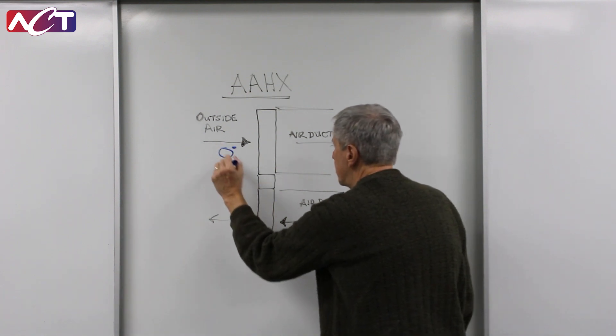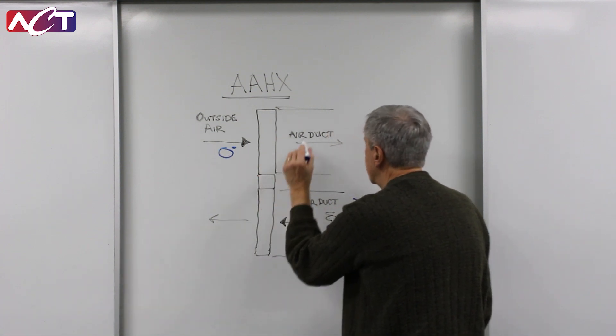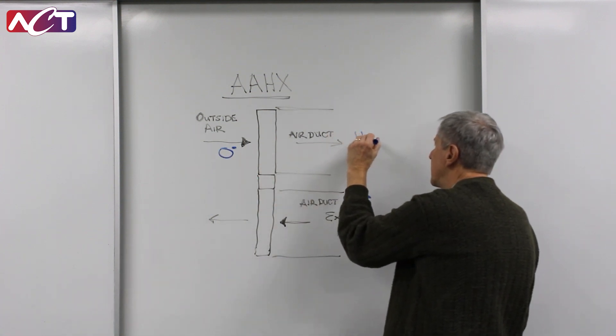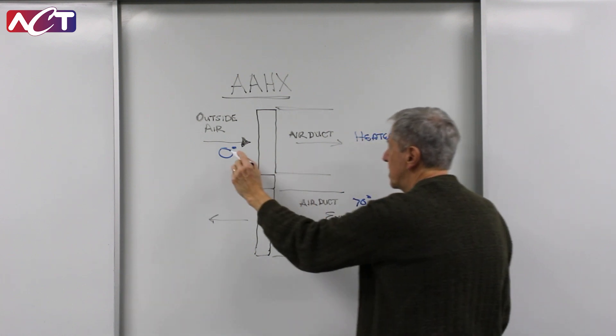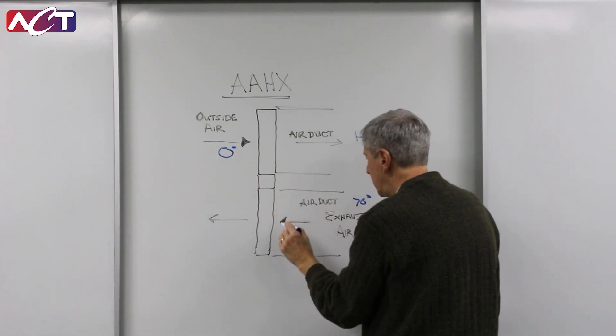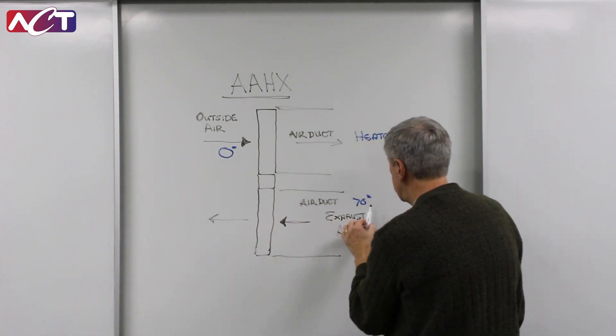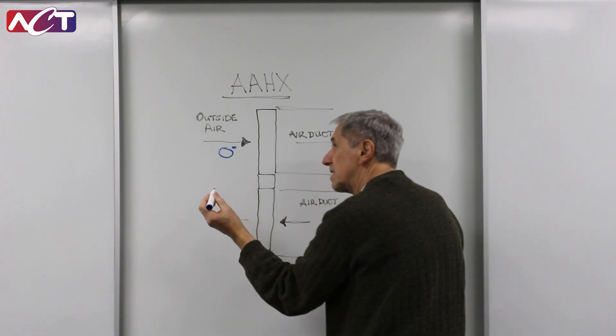So now instead of this building seeing zero degrees coming in with a heater system here that I'm using, the heater system doesn't have to process the very cold zero degrees coming in because I'm going to transfer 60% of this 70 degrees. So six tons.